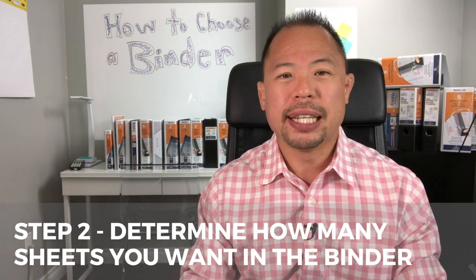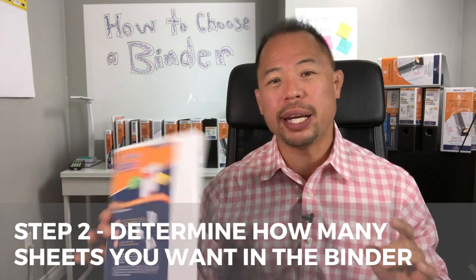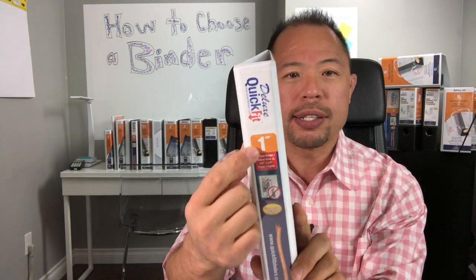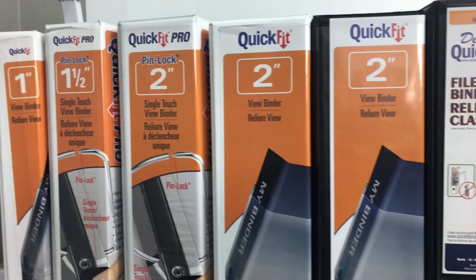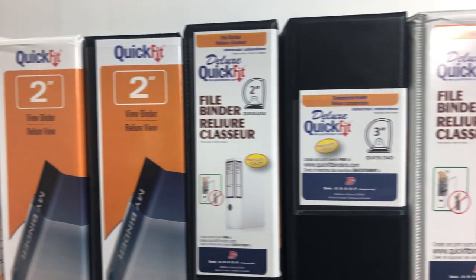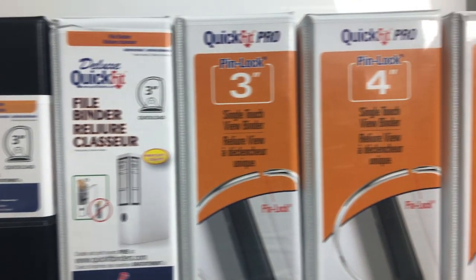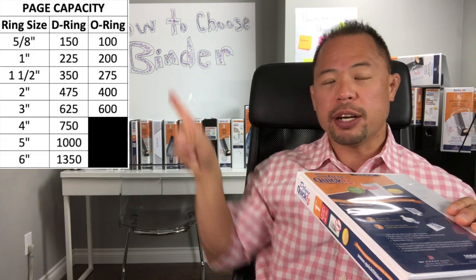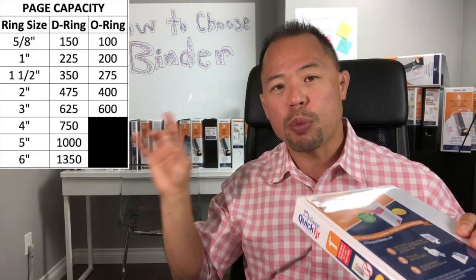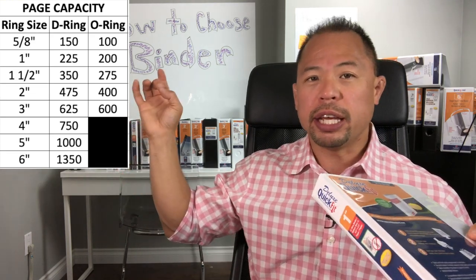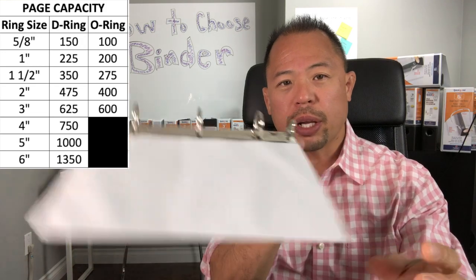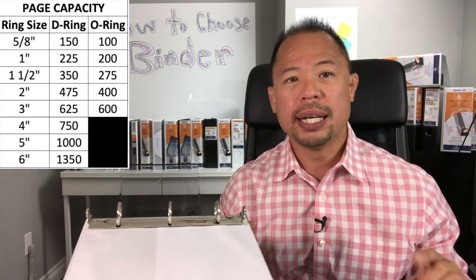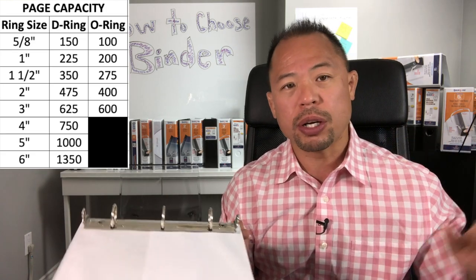The second step is determining the sheet capacity — how many sheets are you going to be putting in the binder? That's going to determine the thickness of the binder. As you can see, this happens to be a one inch binder. Depending on your ring size and thickness, that's going to help determine the sheet capacity. The reference over here shows the sheet capacity and the type of rings associated with it. You'll notice that the regular round ring has the least amount of capacity, and the most capacity is your D-ring. There's a slanted D and a straight D, which we can go over in a bit.